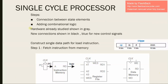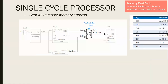Next we'll see how a single cycle data path can be derived for a single cycle processor. The steps are: first, the connection between the state elements; second, adding combinational logic. The conventions followed are: hardware already studied will be shown in gray (the state elements), new connections will be shown in black lines, and blue will be used for new control lines derived.